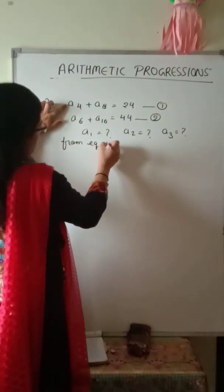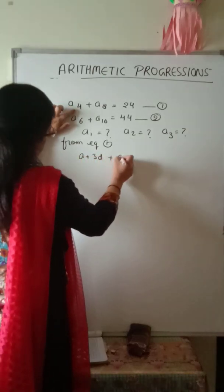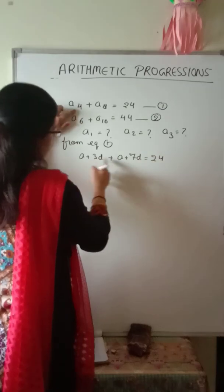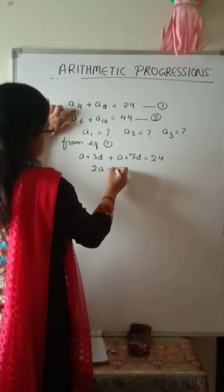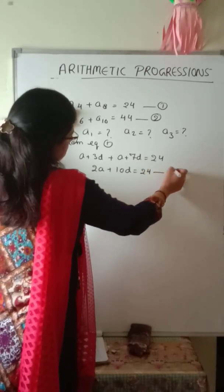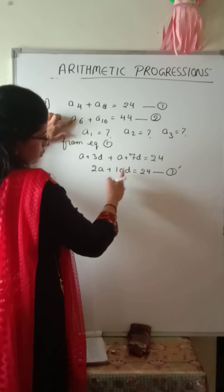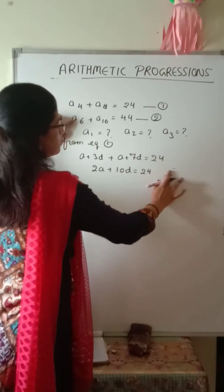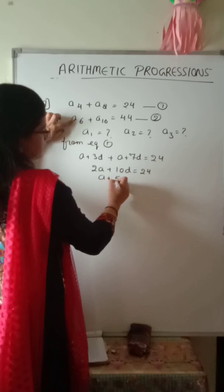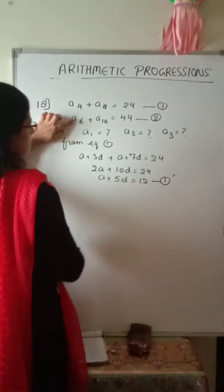From equation 1: (A plus 3D) plus (A plus 7D) equals 24, giving 2A plus 10D equals 24. Dividing by 2, we get A plus 5D equals 12. Call this equation 1 dash.